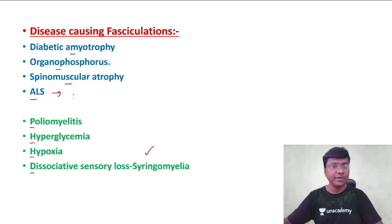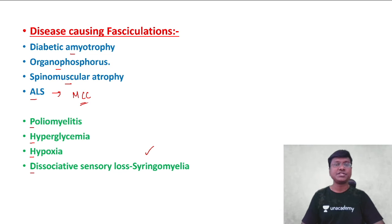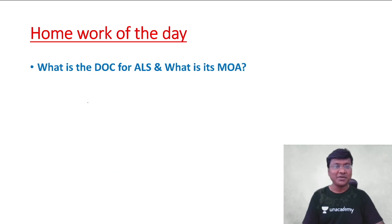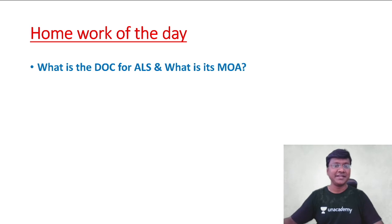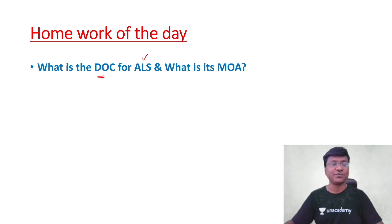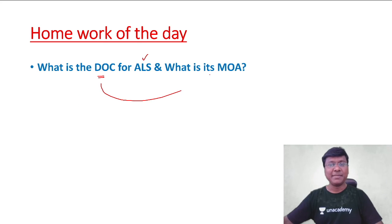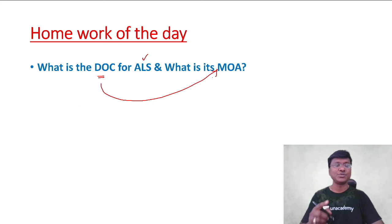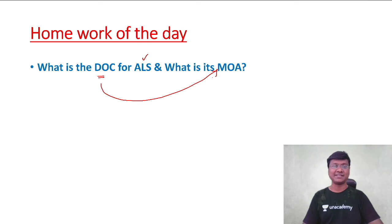The most common cause of fasciculations is amyotrophic lateral sclerosis, which is motor neuron disease. The homework for the day is: what is the drug of choice for amyotrophic lateral sclerosis, and what is the mechanism of action of that drug used in its treatment?